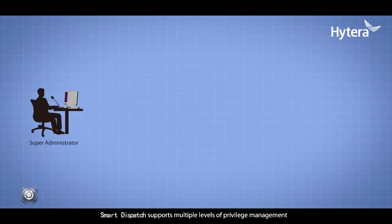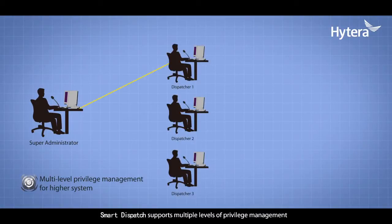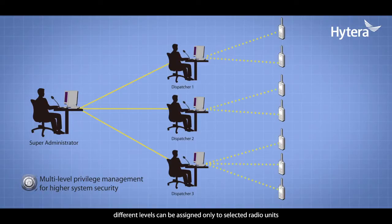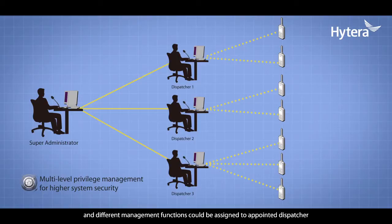Smart Dispatch supports multiple levels of privilege management. The administrator can define privileges of other dispatchers. Different levels can be assigned only to selected radio units, and different management functions could be assigned to appointed dispatchers.